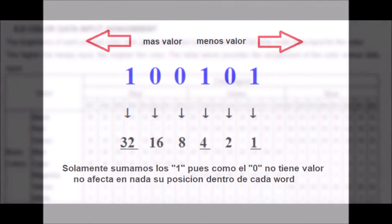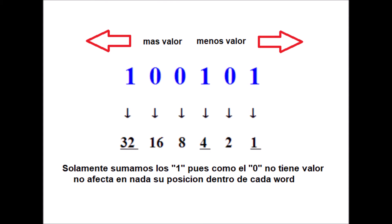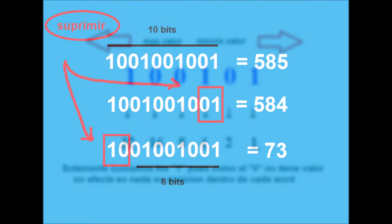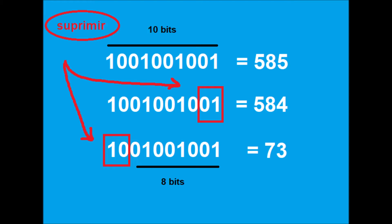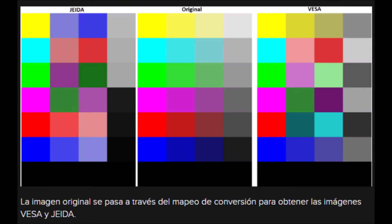Remember that in the binary system, the value of a 1 depends on the position that the bit has towards the left or right of each word. When you have a 10-bit word that wants to fit within an 8-bit word, you have to ignore 2 bits, so the result value is different and the assigned color will also be.